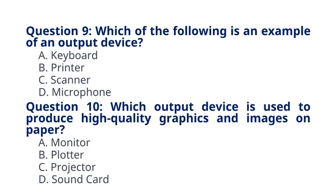Question 10: Which output device is used to produce high-quality graphics and images on paper? A. Monitor. B. Plotter. C. Projector. D. Sound card. The correct answer to question 10 is option B: Plotter. Plotters are used for precise printing of graphics and images.